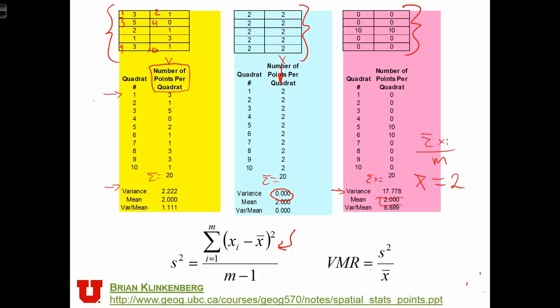And I've recorded the variance in the table at this location. So in the first case, variance is 2.2. And in the clustered case, variance is 17.78.